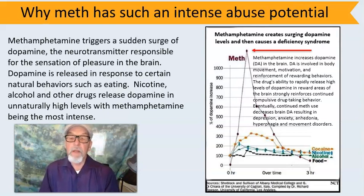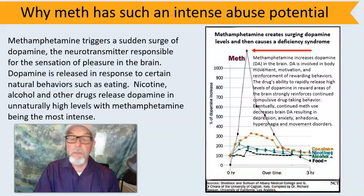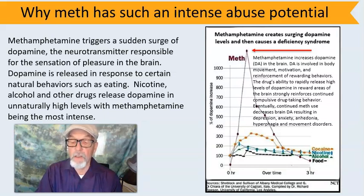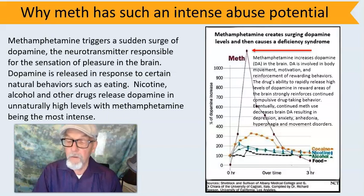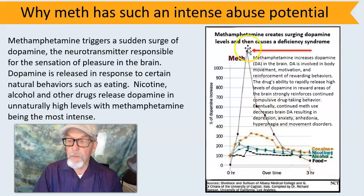So why does methamphetamine have such an intense abuse potential? Look at this chart. Methamphetamine triggers a sudden surge of dopamine, and dopamine is responsible for the sensation of pleasure in the brain. Dopamine is released in response to natural behaviors such as eating; nicotine, alcohol, and other drugs release dopamine as well, producing an unnatural level. But methamphetamine is absolutely the most intense dopamine agonist we know of. This chart by Richard Rawson from UCLA shows comparatively the dopamine-increasing capacity of cocaine, nicotine, alcohol, and food, and contrasts it with the dopamine output produced by methamphetamine.